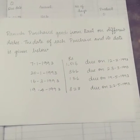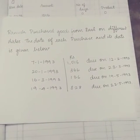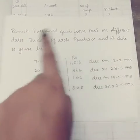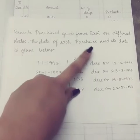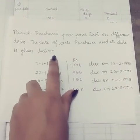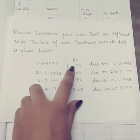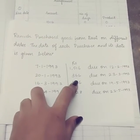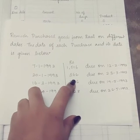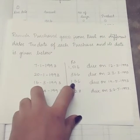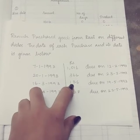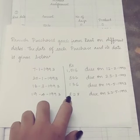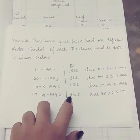Today I am going to talk about average due date. Ramesh purchased goods from Ravi on different dates. The due date and amount for each purchase is given: for the amount 1016 the due date is 12/2/1993, for the amount 366 the due date is 23/3/1993, for the amount 136 the due date is 19/5/1993, and for the amount 828 the due date is 22/5/1993.